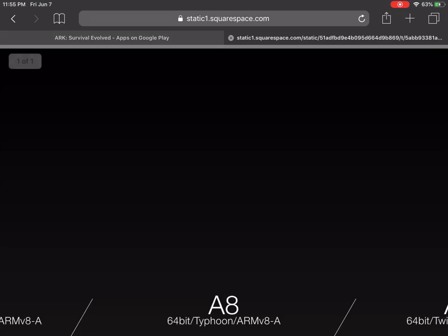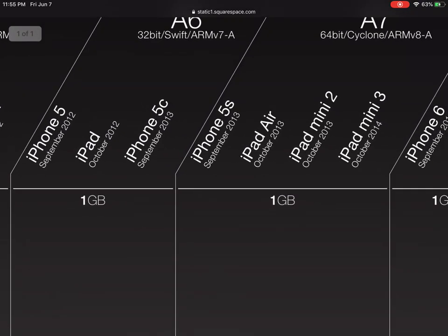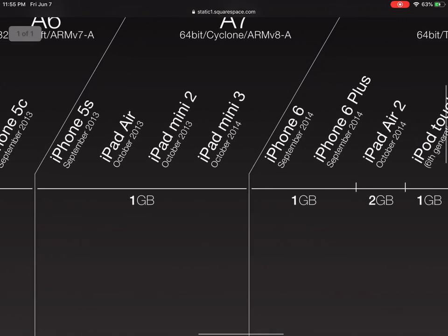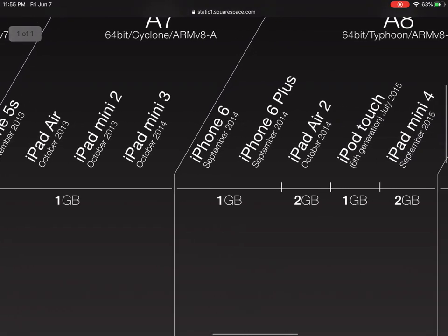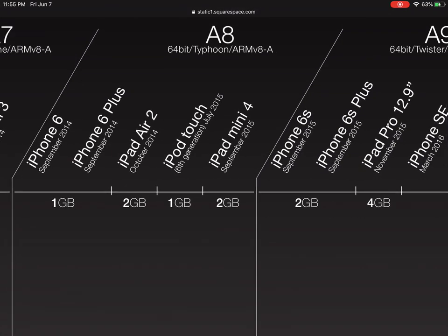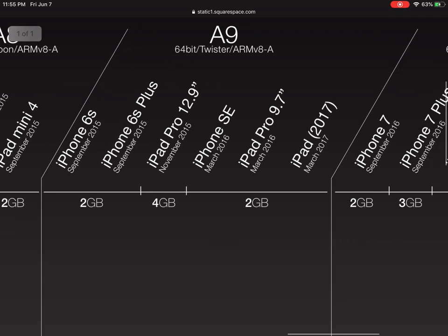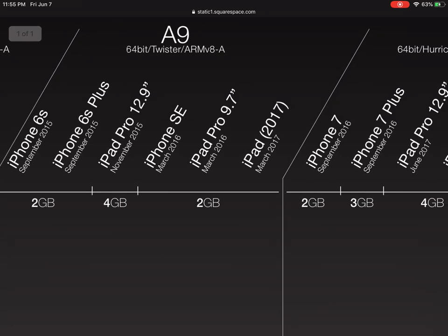According to ARK, it's a RAM issue. Starting with the iPhone 5, they only have one gig of RAM all the way up. It gets a little better around iPhone 6 and 6s — up to two gigs. Some iPads also have two gigs. My iPad is a fifth generation from 2017, so I only have two gigs of RAM, which means I'm below their recommended three gigs.